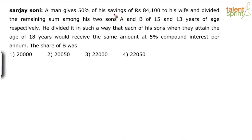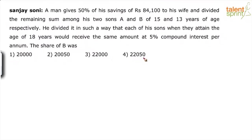A man gives 50% of his savings of Rs. 84,100 to his wife and divides the remaining sum among his two sons A and B of 15 and 13 years of age respectively. He divided it in such a way that each of his sons, when they attain the age of 18 years, would receive the same amount at 5% compound interest per annum. The share of B was: 20,000; 20,050; 22,000; or 22,050.